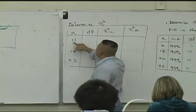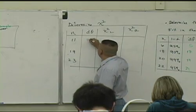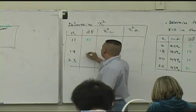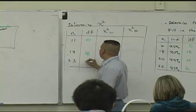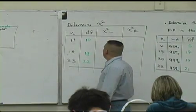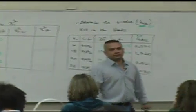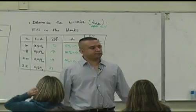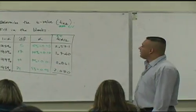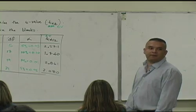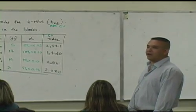So what's 11 minus 1? 10, good. What's 19 minus 1? Good. 23 minus 1? Anybody have any questions on finding the degree of freedom?